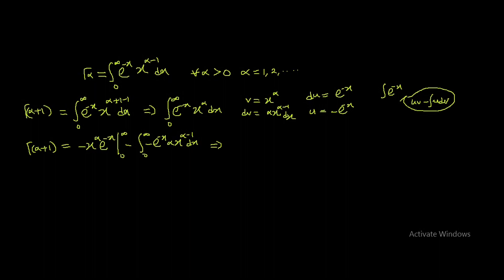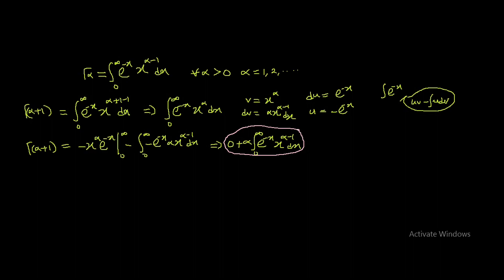Taking the limit: x^alpha * e^(-x) as x goes to infinity turns to zero, so the boundary term is zero. The two minus signs cancel to give plus, and alpha comes out, leaving: zero plus alpha times the integral from 0 to infinity of e^(-x) * x^(alpha - 1) dx. Comparing this with our original expression, they are the same.